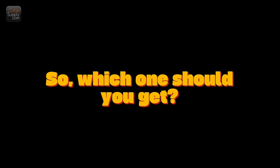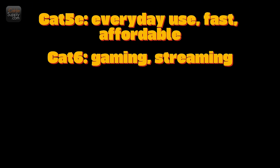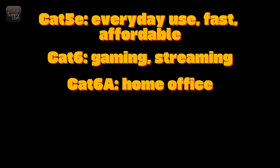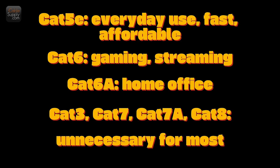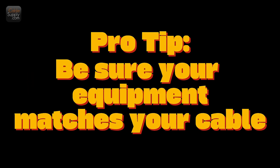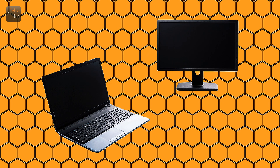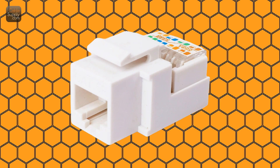So, which one should you get? Here's a quick cheat sheet. CAT 5e: best for everyday home use, fast and affordable. CAT 6: great for gamers, streamers, or future upgrades. CAT 6a: best for home offices or semi-professional setups. CAT 3, CAT 7, CAT 7a, and CAT 8 are mostly for special situations or business use. Pro tip: it's not just about the cable. To get the best performance, make sure the rest of your gear can support the speed too — your router, your modem, your network card inside your PC or laptop, your keystone jacks, connectors, or patch panels. A CAT 8 cable won't help if your router is only built for CAT 5e speeds.